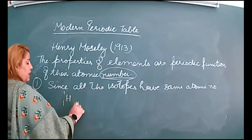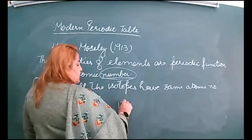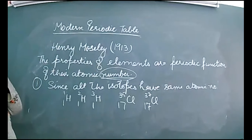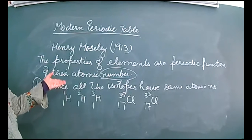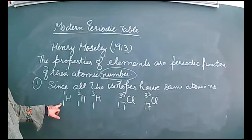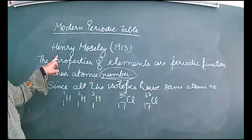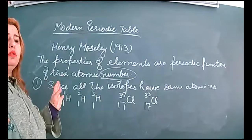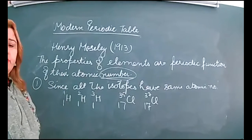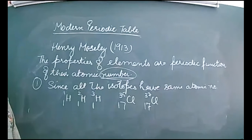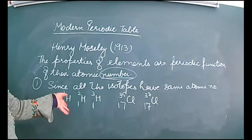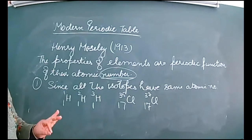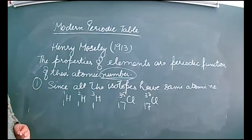For example: ¹H, ²H, ³H and ³⁵Cl, ³⁷Cl — all these isotopes have the same atomic number but different mass numbers. This problem was resolved by Henry Moseley, who said that the properties of elements are a periodic function of their atomic number. The atomic number is always fixed; no two elements can have the same atomic number. So, the discovery of atomic number led to the change in Mendeleev's periodic law.